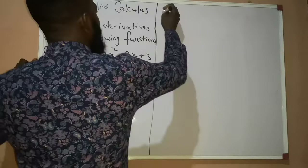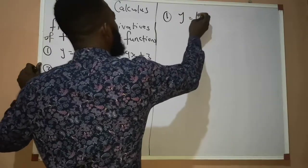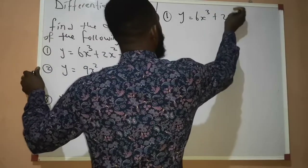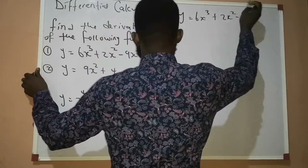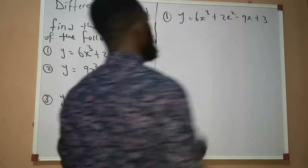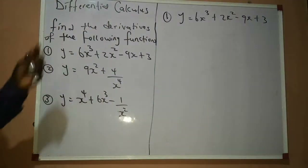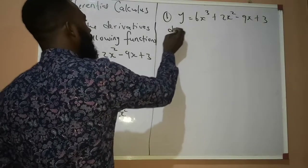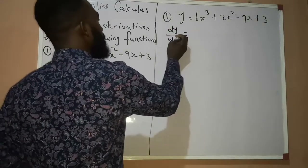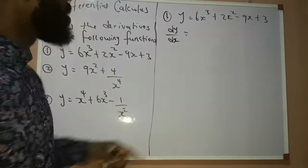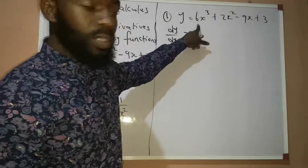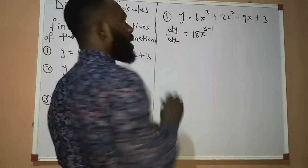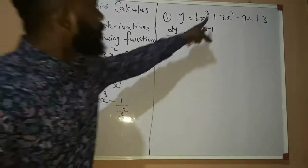Question number 1 says y equal to 6x raised to the power of 3 plus 2x raised to the power of 2 minus 9x plus 3. We are told to find dy over dx. Simply applying the formula, we are going to have 3 multiplied by 6 to give us 18, and then 3 minus 1 according to the formula. After you multiply, you subtract 1.